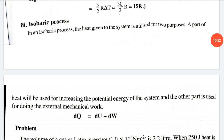Third application: the isobaric process. In the isobaric process, the heat supplied to the system is utilized for two purposes: one part increases the internal energy and the other part does external work. We represent this as dQ equals dU plus dW.